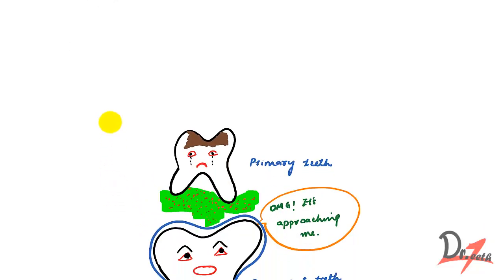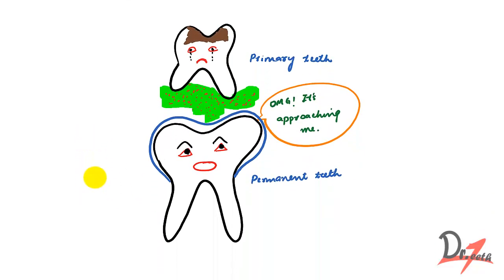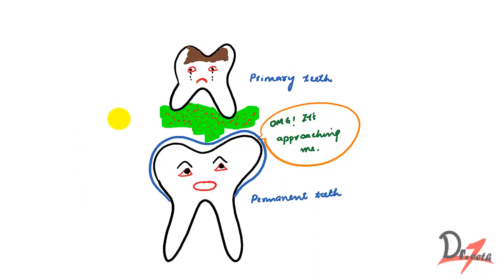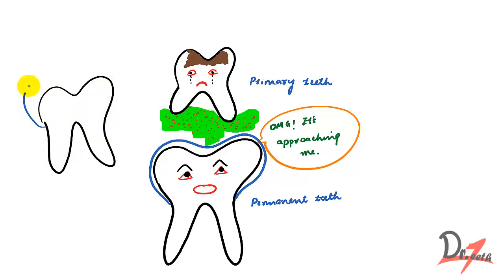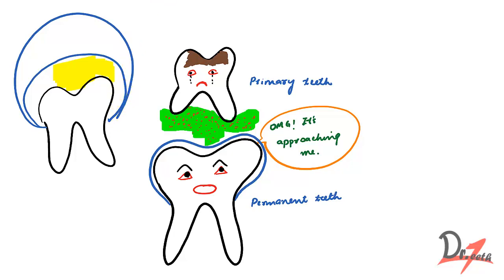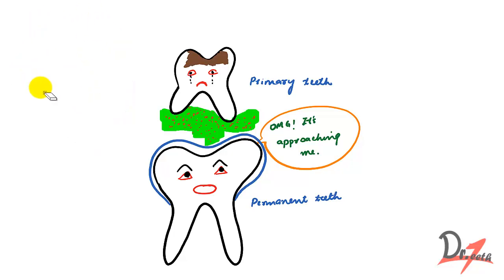We have already covered the pathogenesis — it is the accumulation of fluid. Mostly these are developmental in origin. We had an impacted tooth with the reduced enamel epithelium, and fluid accumulated in between, causing the size to increase. This is the pathogenesis, and we say it is of developmental origin.